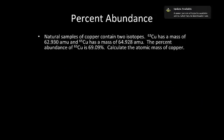Now this one is a little bit different. A natural sample of copper contains two isotopes: copper-63 with a mass of 62.93, and copper-65 with a mass of 64.928. The percent abundance of copper-63 is 69.09. This time I'm not calculating the percent abundance — I'm calculating something different. But I'm still going to use that universal percent abundance equation.